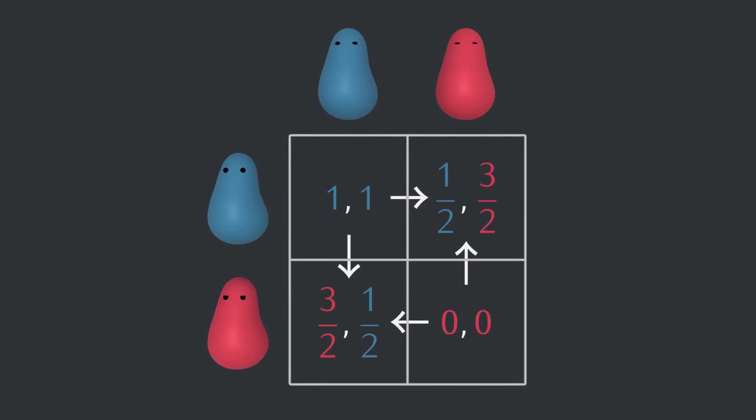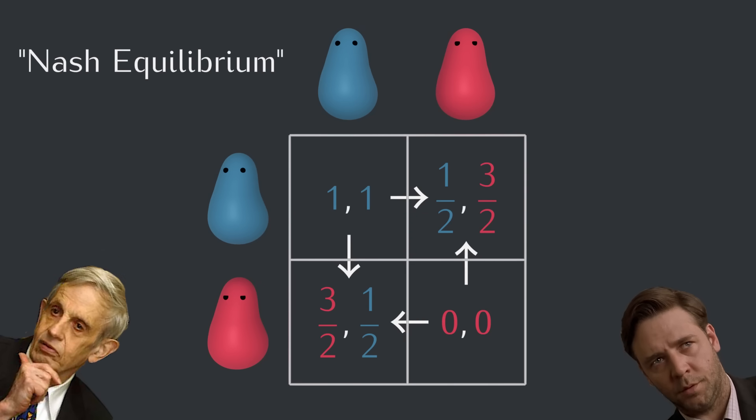And by the way, this way of analyzing choices is called game theory, which is a whole field of math. And a situation where nobody benefits from changing their strategy is called a Nash equilibrium, named after John Nash, who some would say had a beautiful mind.